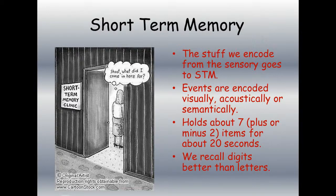Pop quiz: why is your phone number seven digits and your social security number nine digits? If you said it's because of your short-term memory, you are correct. Short-term memory holds a few items briefly — such as a telephone number — while dialing, before the information is either stored or forgotten forever.